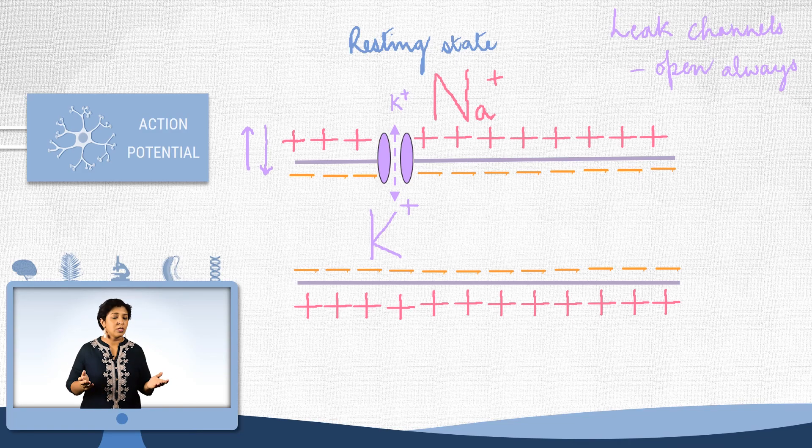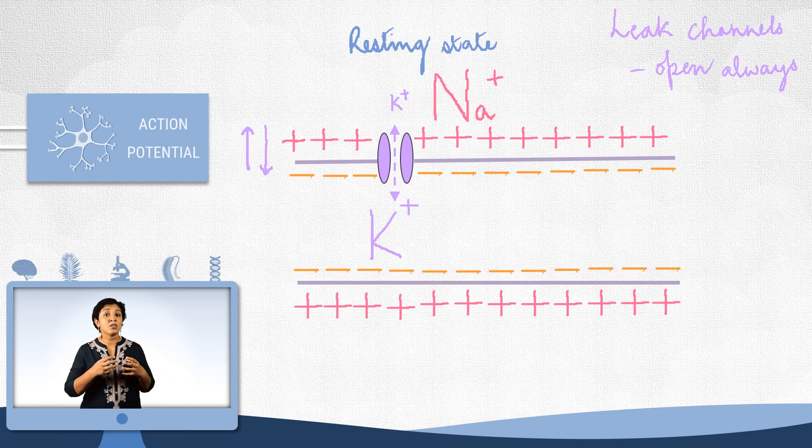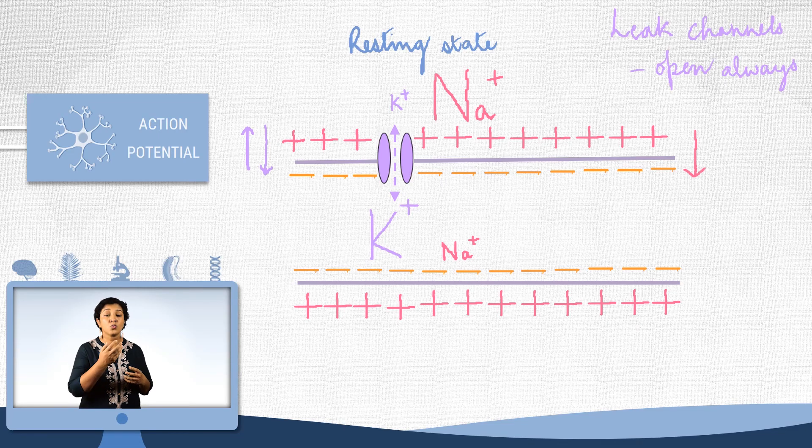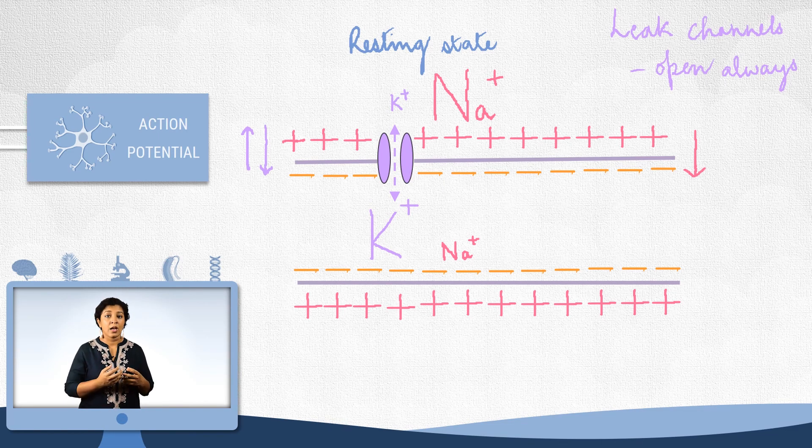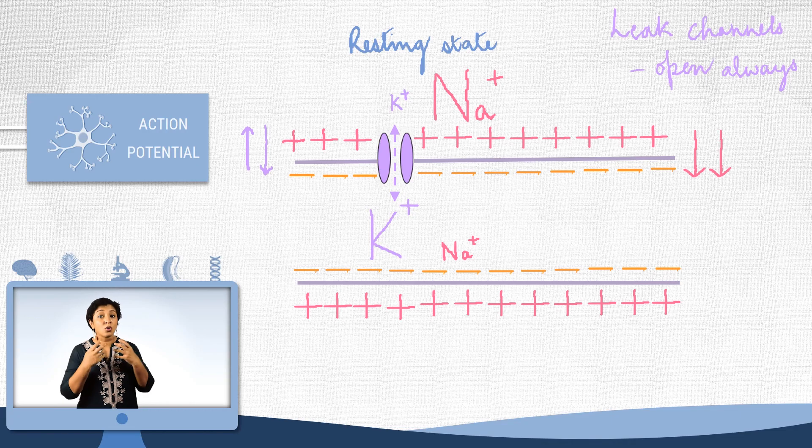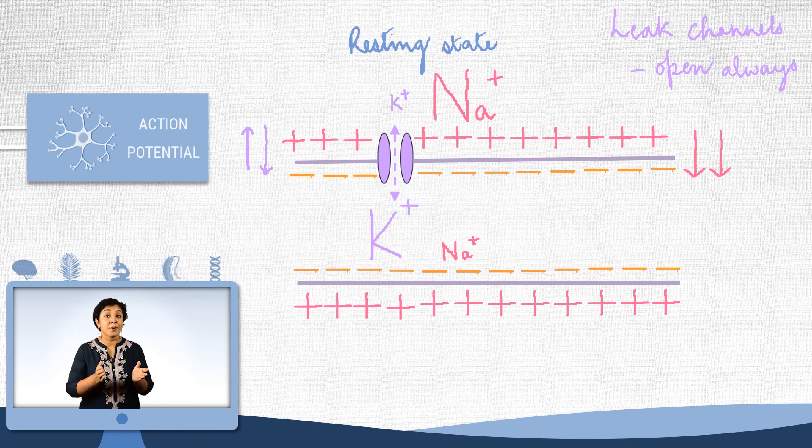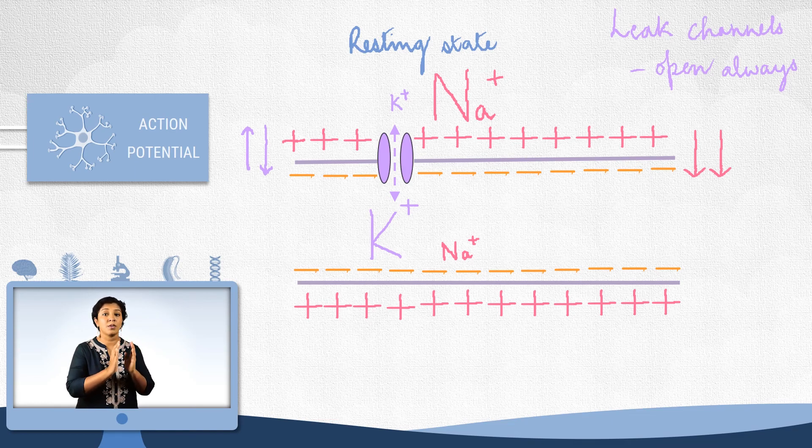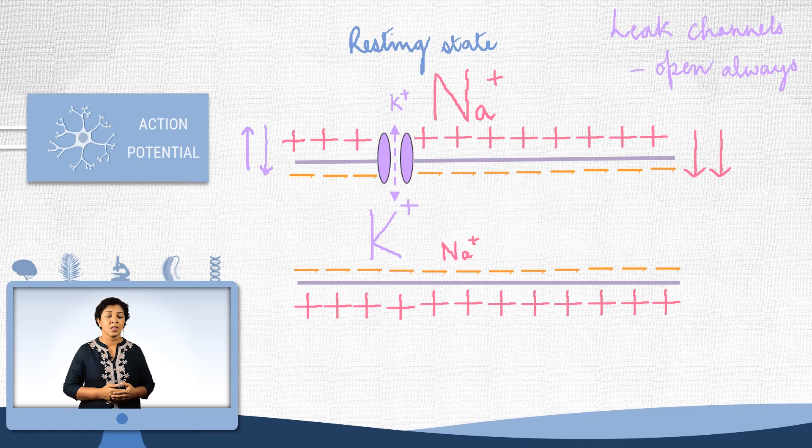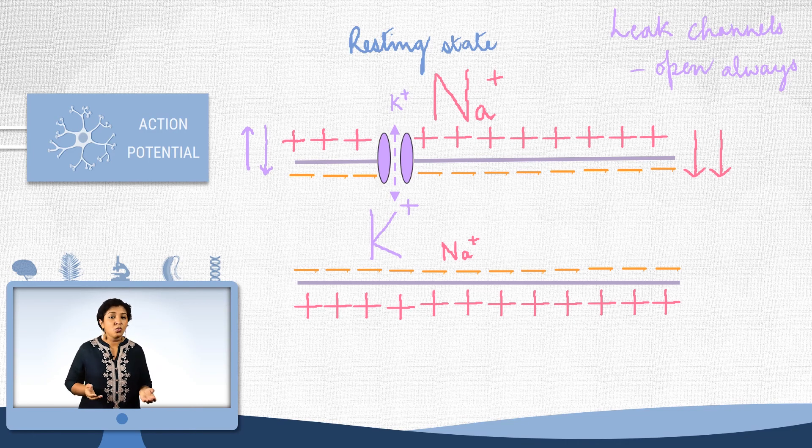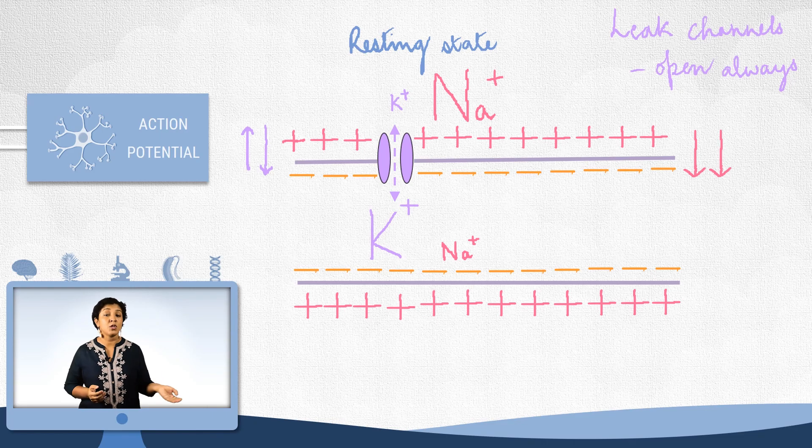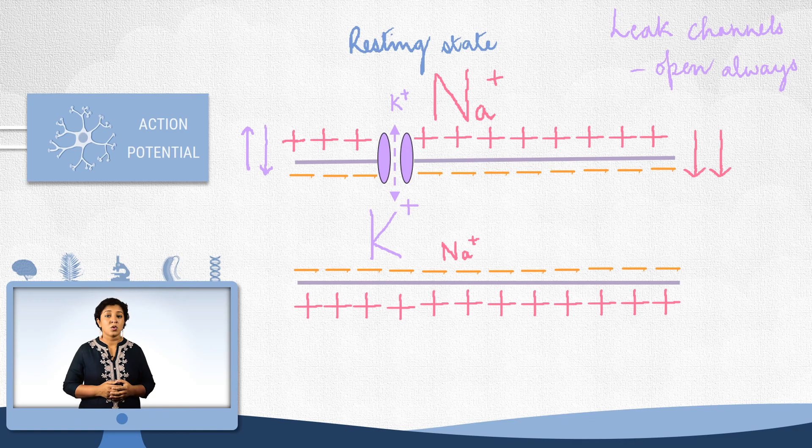But what about sodium? Well, sodium is in high concentration outside. This means these ions would want to diffuse in. And the negative membrane potential will also attract these positive ions. Then how come they do not come rushing in? This is because there are very few sodium leak channels. Not enough for them to enter inside easily. Now, even though these channels are few, if the diffusion goes on for a long time, it would eventually let all the sodium in and dissipate the gradients.